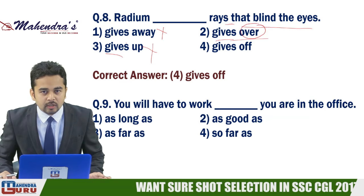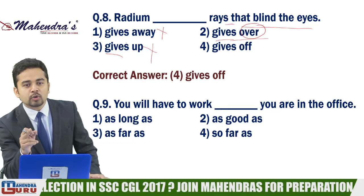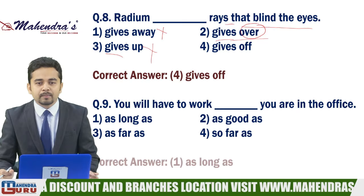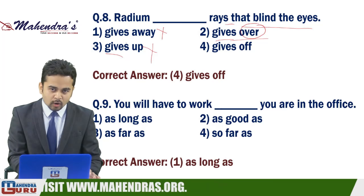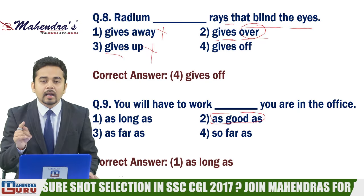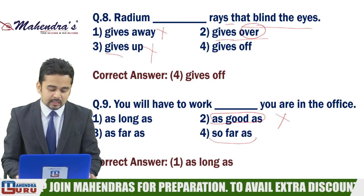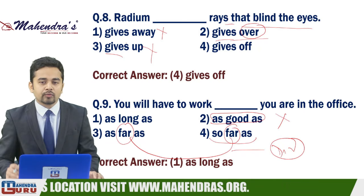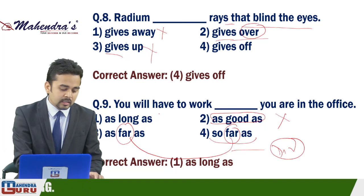Question 9: 'You will have to work ___ you are in the office.' Options: as long as, as good as, so far as। Answer है option number first - 'as long as'। As good as comparison के लिए use होता है। So far as distance related होता है। As long as time के लिए है - जब तक तुम office में हो, तुम्हें काम करना होगा।